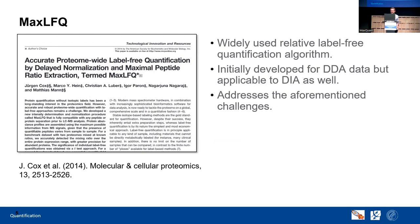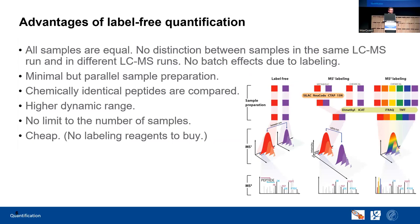Label-free quantification has many advantages. The samples are all equal — you don't have to do any labeling, so you don't have batch effects. You don't have to order and pay for tags or even SILAC, which means less effort in sample preparation. Also the peptides are chemically identical and since you don't add any additional complexity, you also have a high dynamic range in your data.